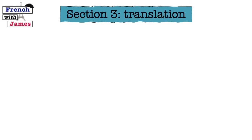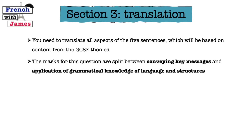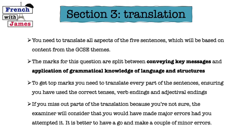Section 3 is the translation task — translate five sentences from English into French, based on GCSE themes. The marks are split into two categories: conveying key messages, meaning getting the messages across even if not perfectly, and application of grammatical knowledge of language and structures — knowing the vocabulary and grammar. To get top marks you need to translate every part of the sentences, use the right tenses, the right verb endings, and ensure adjectives agree with the nouns they describe. If you miss out a chunk because you're unsure, the examiner will assume you'd have made major errors, so it's always better to have a go and make minor errors.